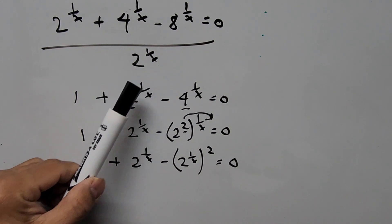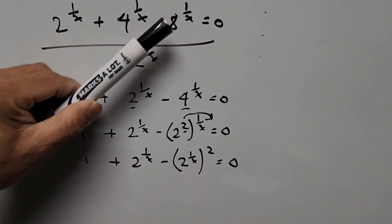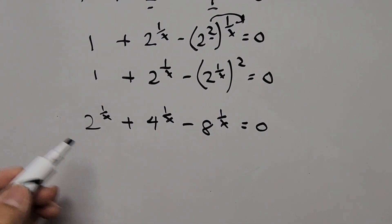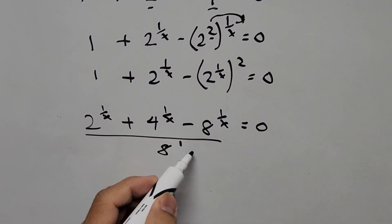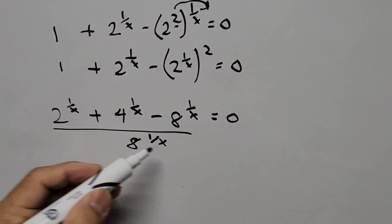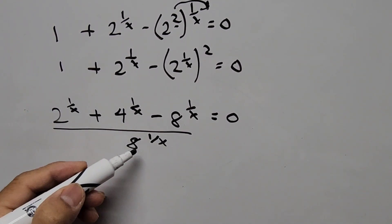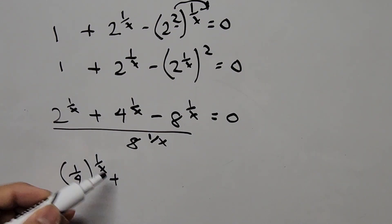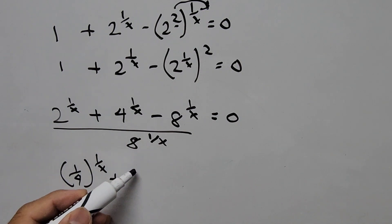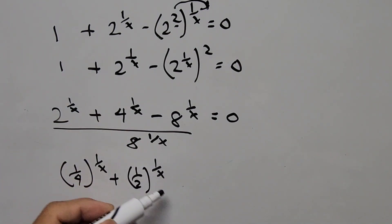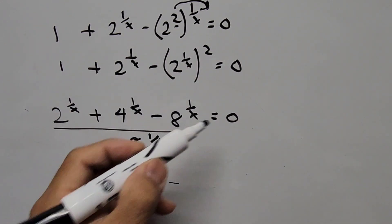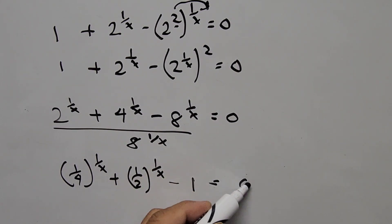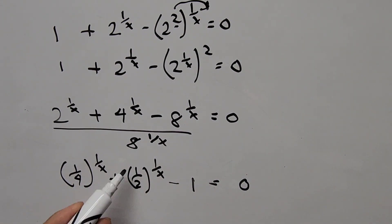How about dividing the whole equation by 8 to the power of 1 over x? Let's do that. We have the whole equation again and we're dividing by 8^(1/x). The bases are different but the exponents are the same, so: 2 divided by 8 is 1 fourth, raised to the power of 1 over x. Plus: 4 divided by 8 is 1 half, raised to the power of 1 over x. Minus: dividing by itself gives 1. Equals 0, since 0 divided by 8^(1/x) is 0. If you notice the bases are 1 fourth and 1 half.